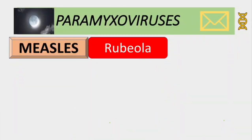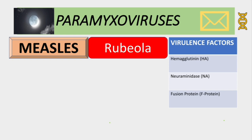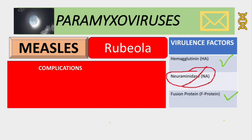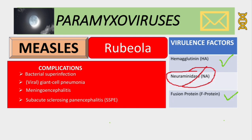In paramyxoviruses in general there are three virulence factors: hemagglutinin, neuraminidase, and fusion protein. But in measles specifically, we have hemagglutinin and fusion protein — we do not have neuraminidase. The major complications of measles include bacterial superinfection, viral giant cell pneumonia, meningoencephalitis, and subacute sclerosing panencephalitis.